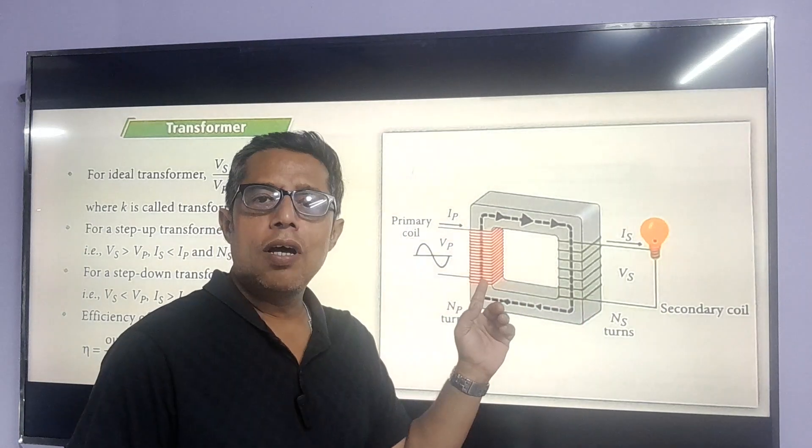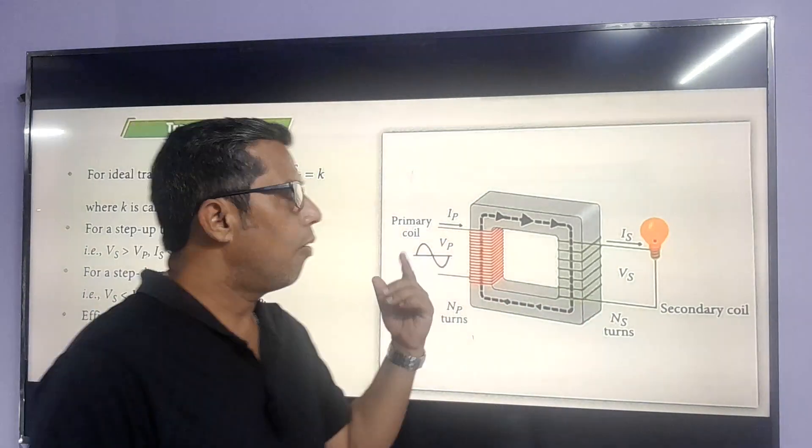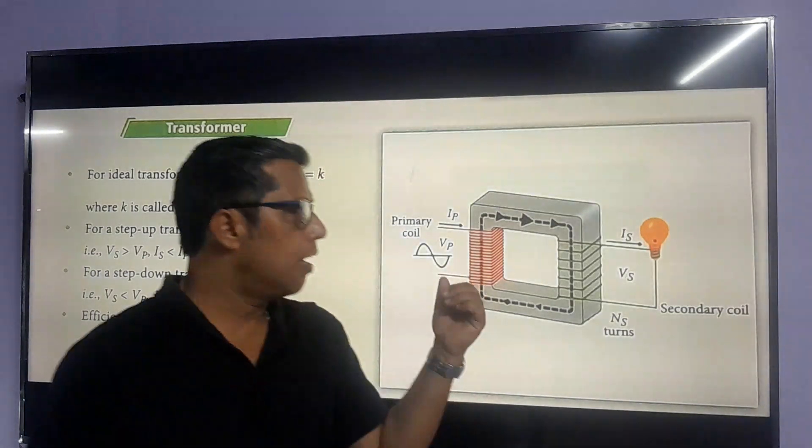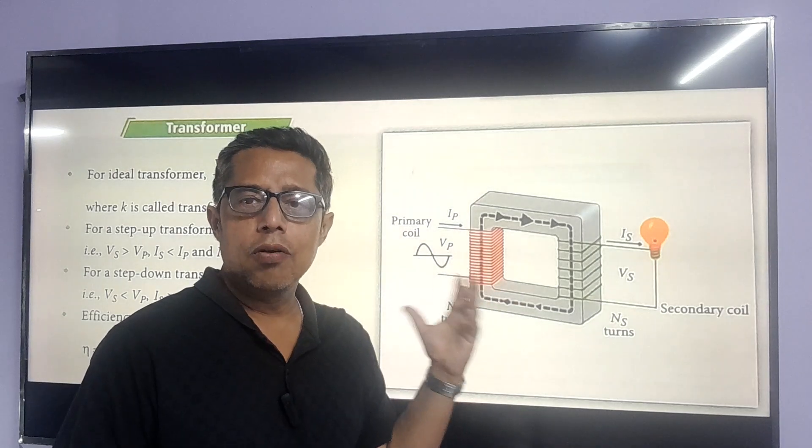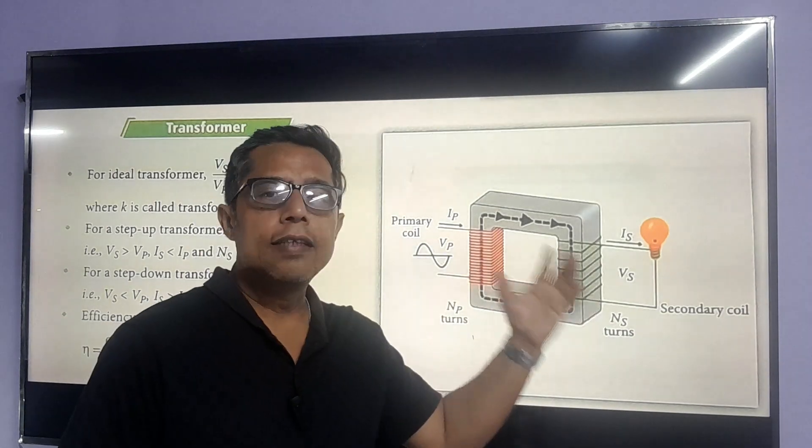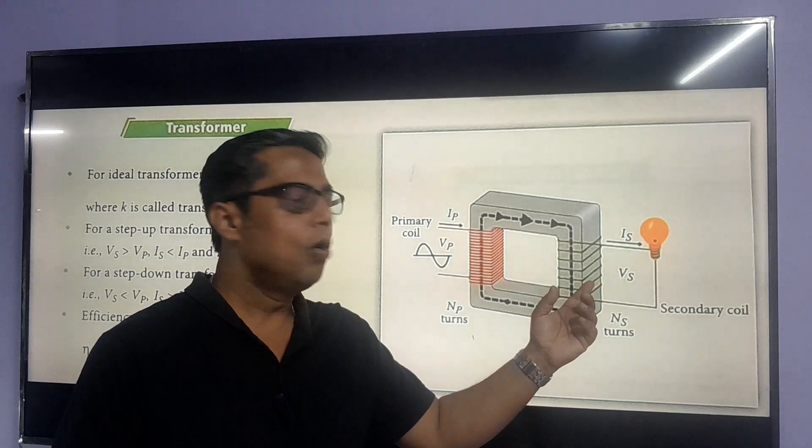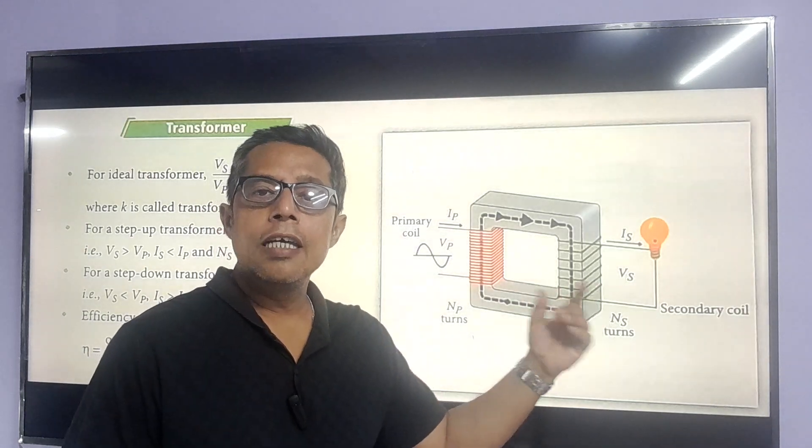In the primary coil, we have alternating current, and due to this current there will be induced EMF. This magnetic field produced in the primary coil will flow to the secondary coil. In the secondary coil, we will receive the change in magnetic flux.